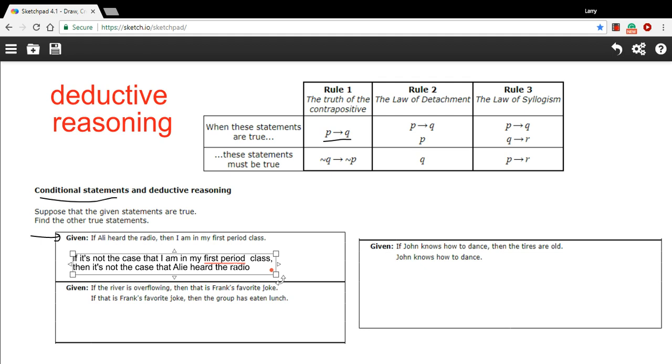That's the first rule. The second rule is the law of detachment, and it says that if you have if P then Q, and that's true, and if P itself is true, then Q has to be true. If you think about that for a second, that should be pretty obvious: if something is true then the other thing is true, and that something is true, well then the other thing has to be true.